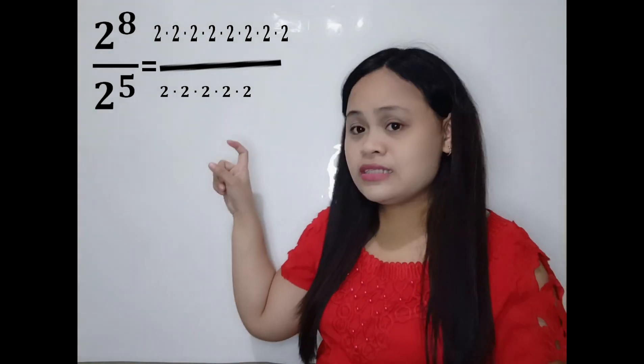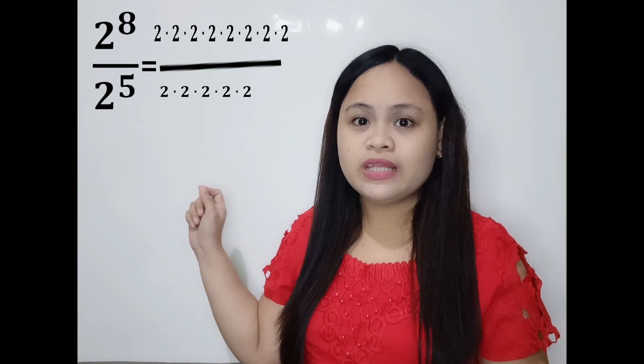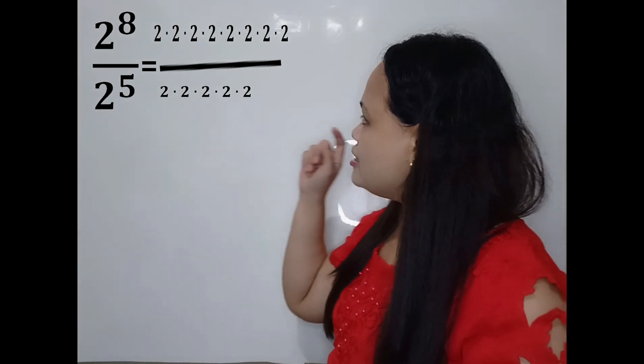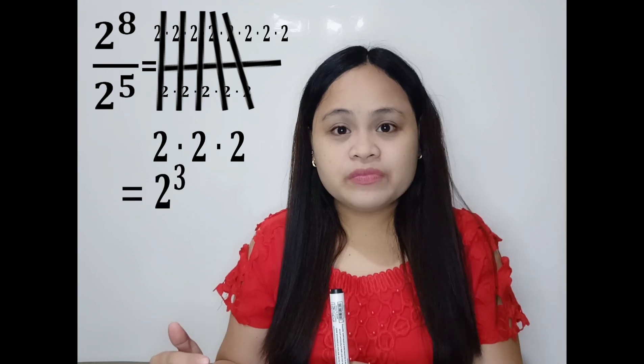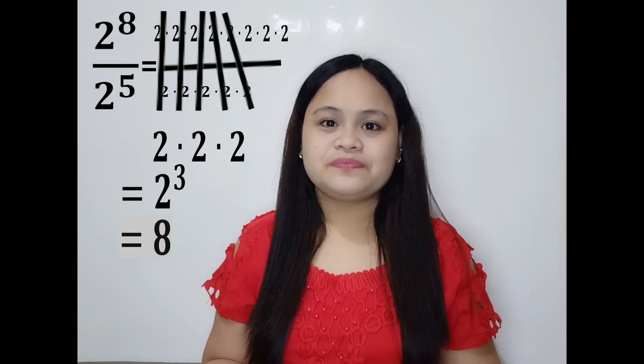What about dividing an exponential expression? Let's say we have 2 to the power of 8 divided by 2 to the power of 5. Remember that 2 to the power of 8 is multiplying 2 eight times to itself, and 2 to the power of 5 is multiplying 2 five times to itself. Kapag magdedivide tayo ng ganito, pwede tayo magcancel ng pairs — kapag magdedivide ka ng parehas na number, that's equal to 1. So we cancel five pairs, and tatlo na 2 ang matitira. That is 2 times 2 times 2, or 2 to the power of 3, which equals 8.